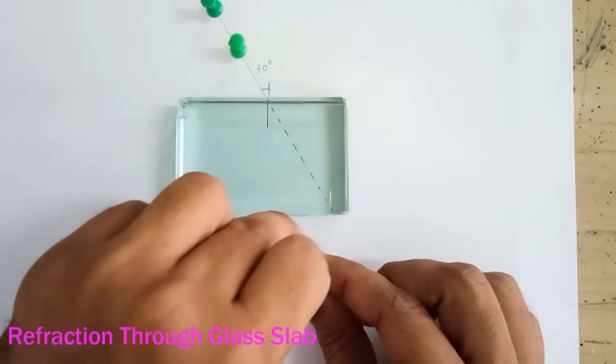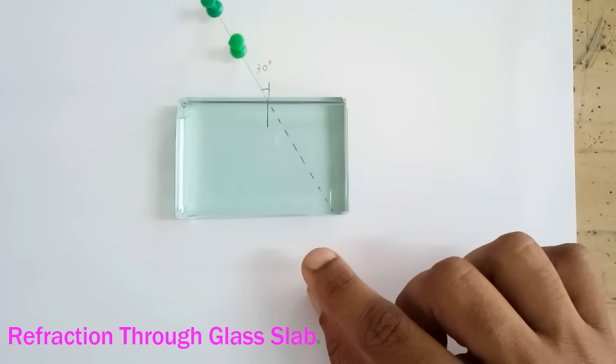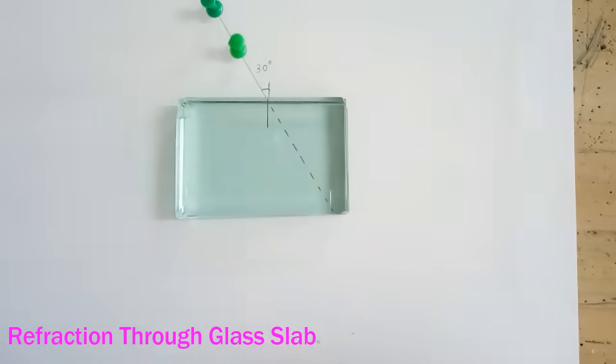So these two softboard pins I am supposed to put it over here and I will have to keep one of my eyes closed and I will have to put these two softboard pins in such a way that all four are in a straight line.